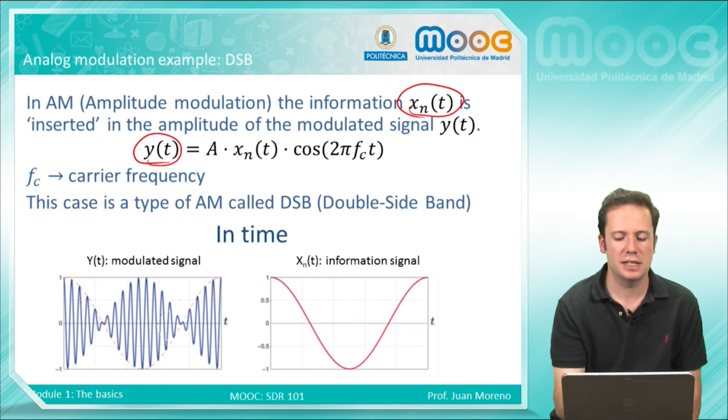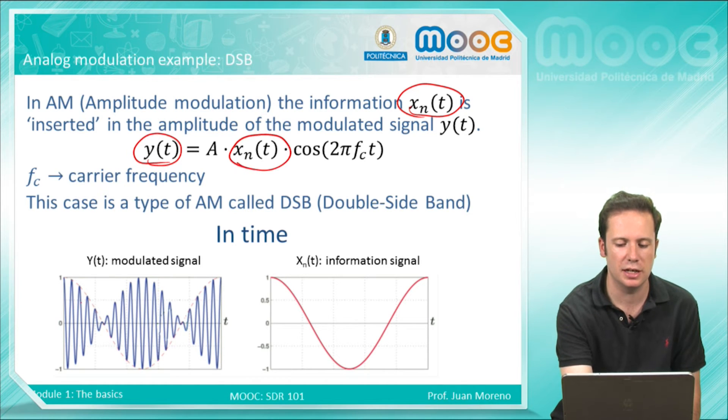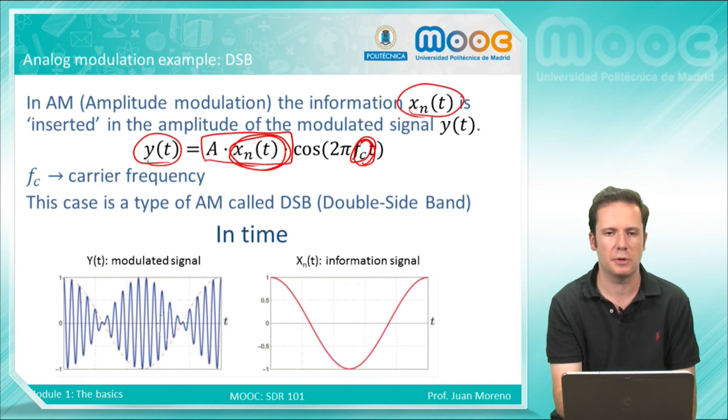You can see in this example the double sideband modulation, which is a case of amplitude modulation, that the information signal xₙ(t) is in the amplitude of the modulated signal y(t), and the frequency of the transmitted signal, fc, is fixed. It's the carrier frequency.